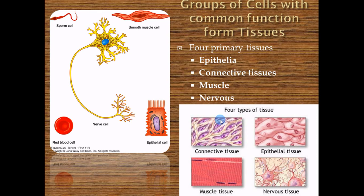Groups of cells with common functions form tissues, and there are four primary tissues you need to know. The first is epithelium — think of it as a protective, sheet-like covering. Wherever you see epithelium, it forms a sheet, like your skin. Your skin comes all the way over the surface of your body, folds in, goes down into your mouth, esophagus, stomach, small intestine, large intestine, and out — a continuous sheet of epithelium with no breaks.